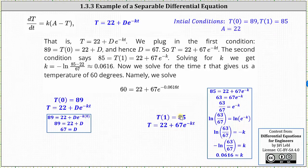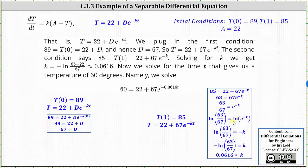Now we can use T of one equals 85 to determine K. We substitute one for t and 85 for big T, giving us 85 equals 22 plus 67 times e to the power of negative K times one, which is just negative K. To solve for K, we subtract 22 on both sides, then divide both sides by 67. Next, we take the natural log of both sides. Applying the power property of logs, the natural log of e to the negative K equals negative K times natural log e, and since natural log e equals one, we get negative K equals the natural log of 63/67. Dividing both sides by negative one and going to the calculator, negative natural log of 63/67 is approximately 0.0616.